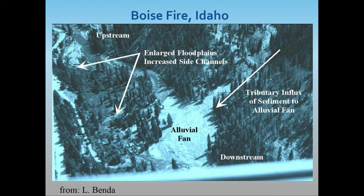Alluvial fans can create quite complex and diverse habitat. This is an example from the Boise Fire where a fan came down and moved the stream — you can see it starting to impinge on the road. But this was quickly colonized by bull trout for spawning and rearing, creating a whole new patch of habitat. It's the combination of sediment and wood delivered into these channels — the effects Becky was describing — that helps create these new environments.